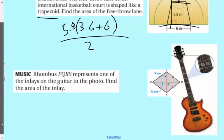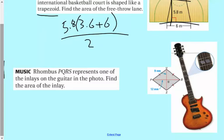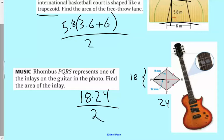And then here we have a guitar and we have these inlays here are represented by rhombuses, and what they want us to do is find the area. So we have one-half diagonal one times diagonal two. Now if you look at where the arrows point, this 12 is referring to that there, so diagonal one is really 24. Diagonal two is really 18. So we'd have 18 times 24 divided by 2, and that will give you the area of each one of those inlays.